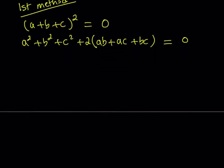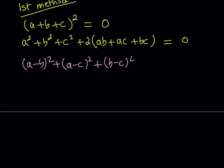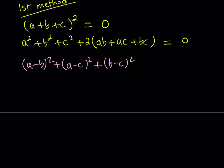We're going to start with something well known. Since a, b, c are real numbers, we do know that the sum of squares cannot be negative. So I can safely say that the quantity a minus b squared, plus the quantity a minus c squared, plus the quantity b minus c squared is always going to be greater than or equal to zero.